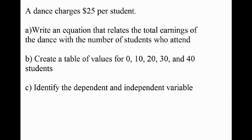To finish our introduction to relations, here's a task: a dance charges twenty-five dollars per student. Two pieces of information relate mathematically — the number of students attending and the money earned. First, write an equation relating total earnings to number of students. Then create a table of values using zero, ten, twenty, thirty, and forty students. Finally, identify the dependent and independent variables. If you can do that, you have a firm understanding of an introduction to relations.